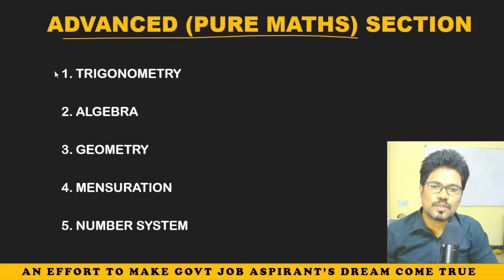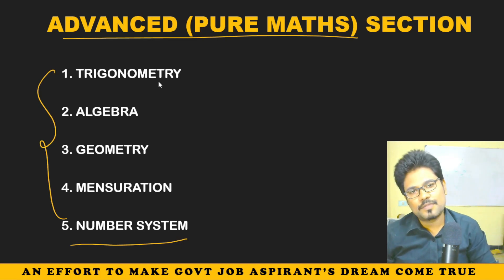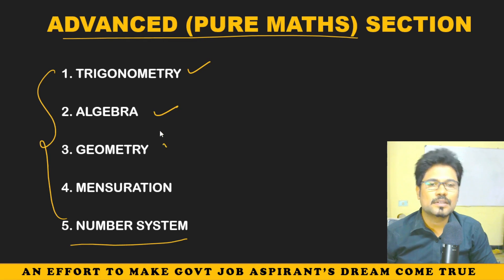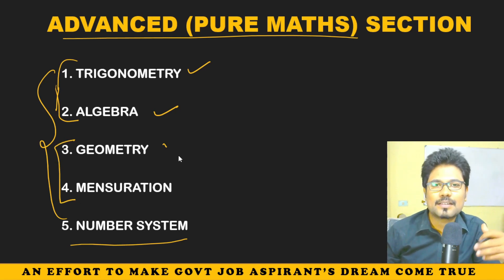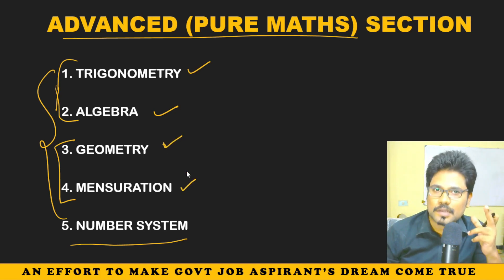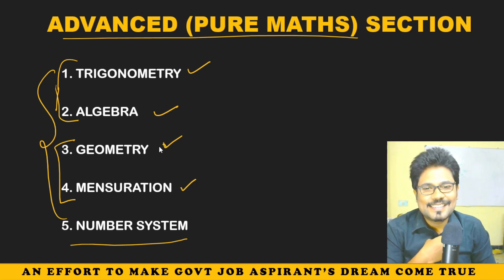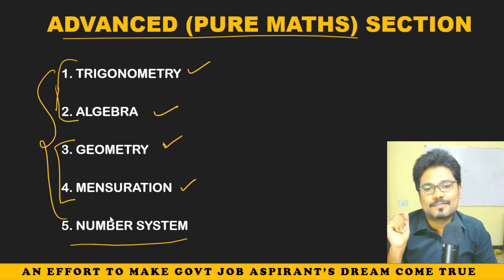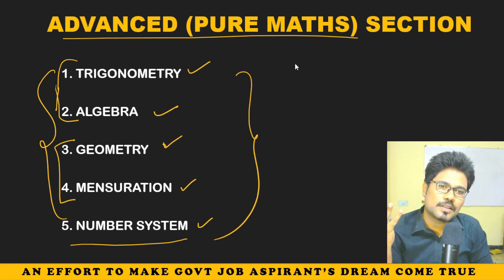This is all about the Arithmetic section. Let us go with the Advanced section. In the Advanced section there are five parts — you can include some in Arithmetic or Advanced, it doesn't matter. We start with Trigonometry, then Algebra — these two have similar concepts with different formats. Geometry and Mensuration — comment in the comment box: what is the difference between Geometry and Mensuration? That will show me you are a serious aspirant. And finally, Number System. These are the topics we cover in the Advanced Maths or Pure Maths section.